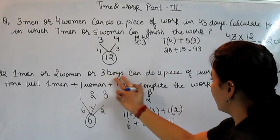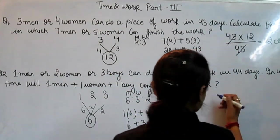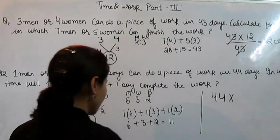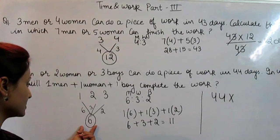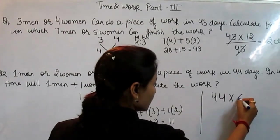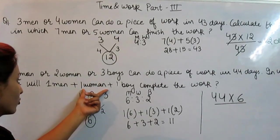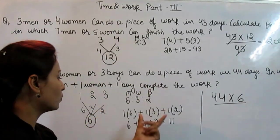Now again take this work, that is 44. And now take this, that is total work. And we have to calculate the time when 1 man plus 1 woman plus 1 boy complete the work.